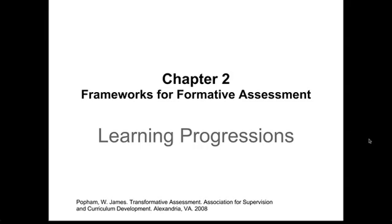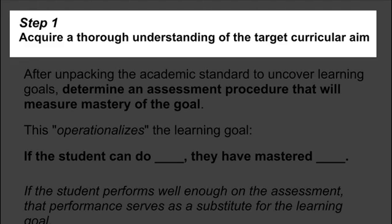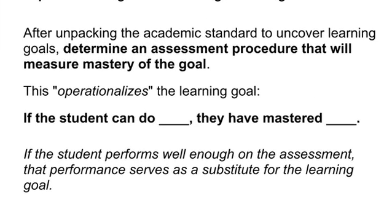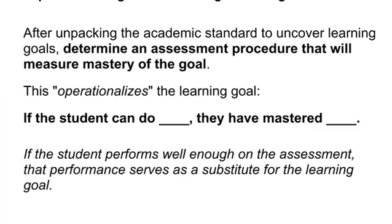In this chapter, Popham goes over four steps to creating a learning progression. The first step is to acquire an understanding of the learning goal. One thing that really struck me here is that in Step 1 you operationalize the learning goal. He had a really nice statement: 'If the student can do blank, they have mastered blank.' So you ask yourself, what is the student going to do to show me that they know or can do what the learning target is asking them?